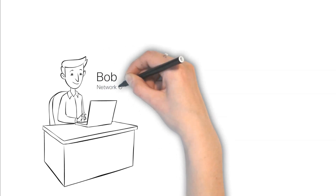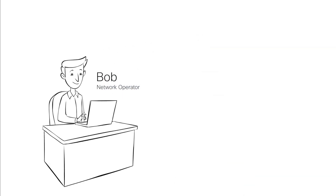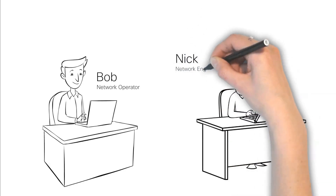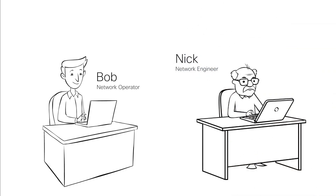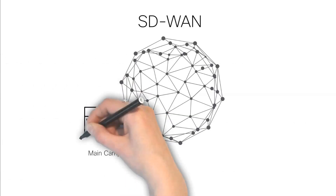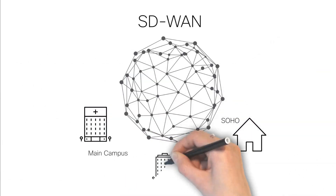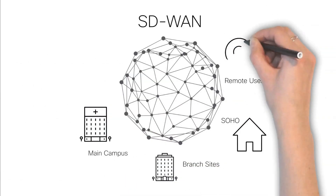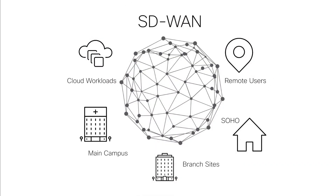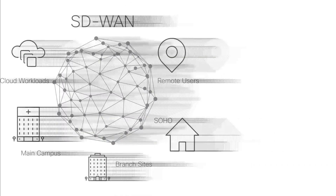Here we have Bob, a network operator on a team in charge of maintaining the company's network. His network engineer counterpart, Nick, helps to identify technical solutions for network performance and management inefficiencies. They currently utilize Cisco Catalyst SD-WAN to securely connect sites and automate cloud workload connectivity.